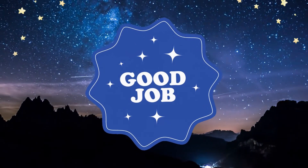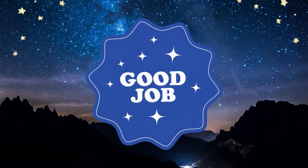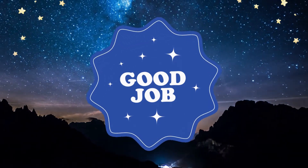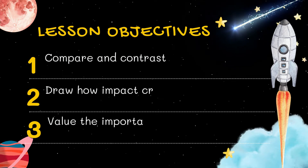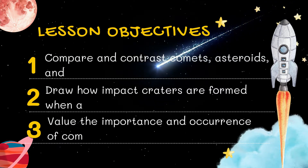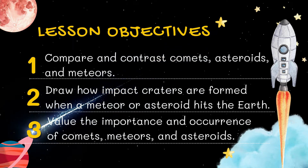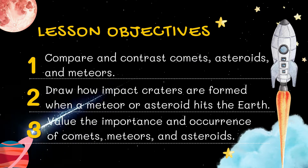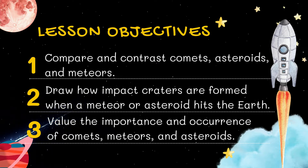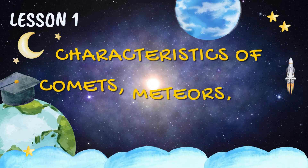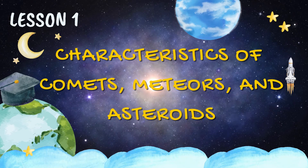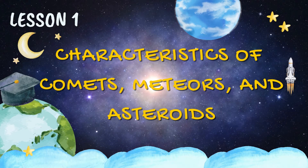Who among you got a perfect score? If so, good job! Here are our lesson objectives. After going through this lesson, you should be able to: 1. Compare and contrast comets, asteroids, and meteors. 2. Draw how impact craters are formed when a meteor or asteroid hits Earth. 3. Value the importance and occurrence of comets, meteors, and asteroids. Let us now proceed to our lesson: Characteristics of comets, meteors, and asteroids.